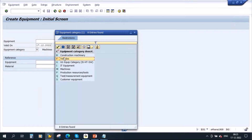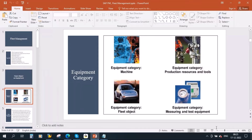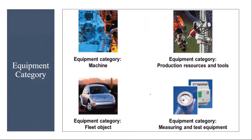During our equipment session, we created equipment with category F. But in today's session, we will understand in depth the fleet stock. Basically, all vehicles in the company like trucks, cars, buses, vans — whatever is there — are created with equipment category fleet.